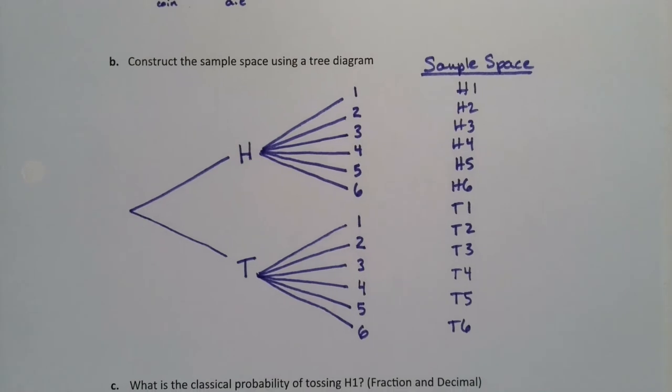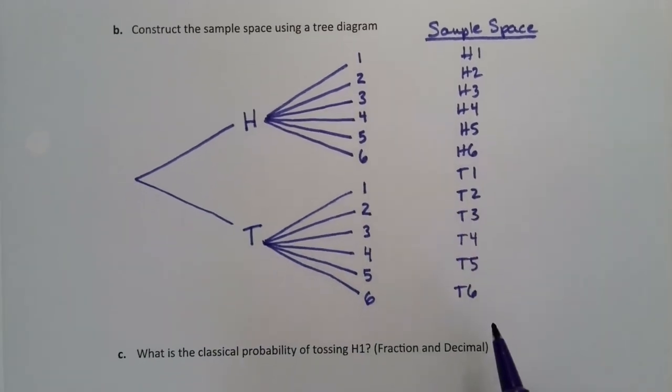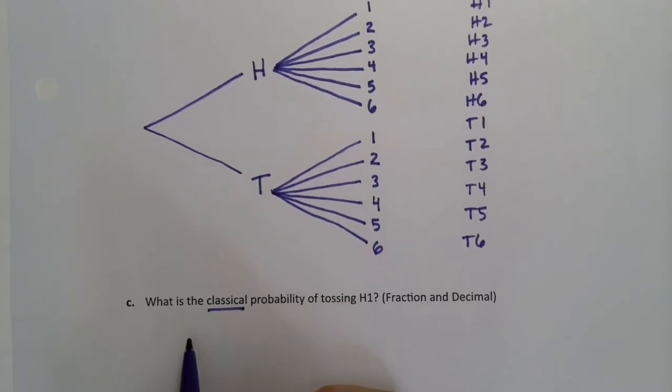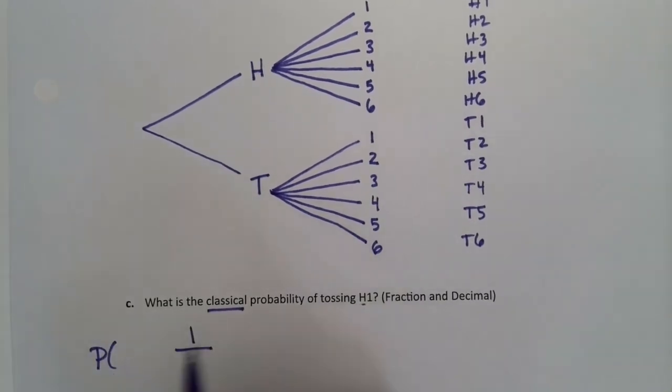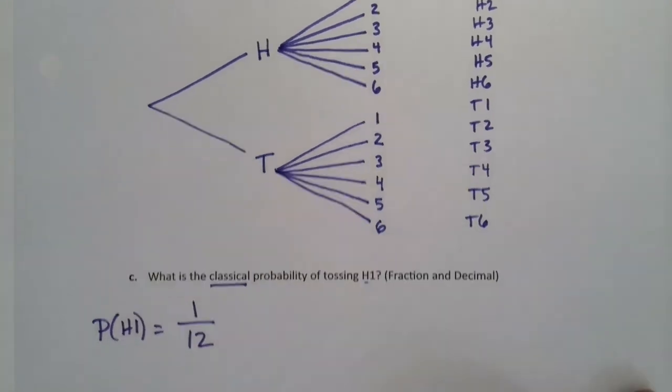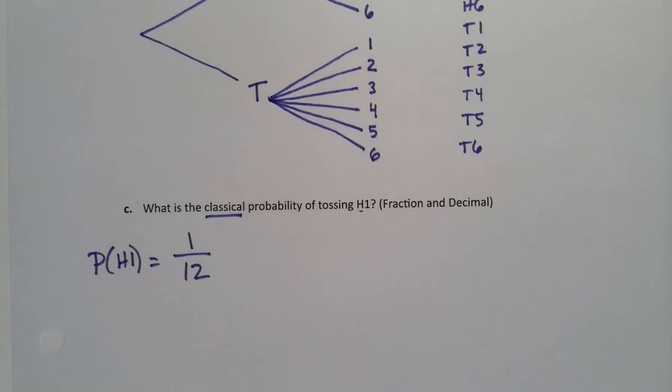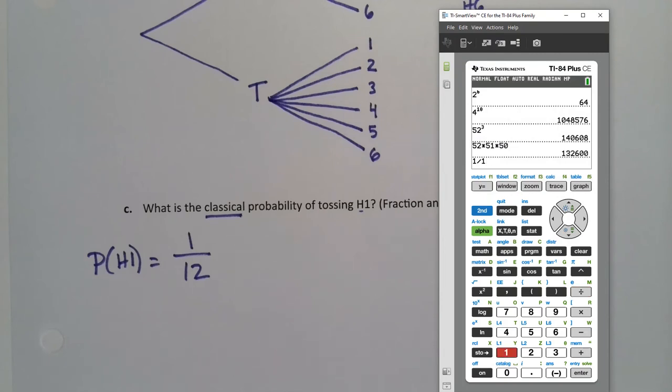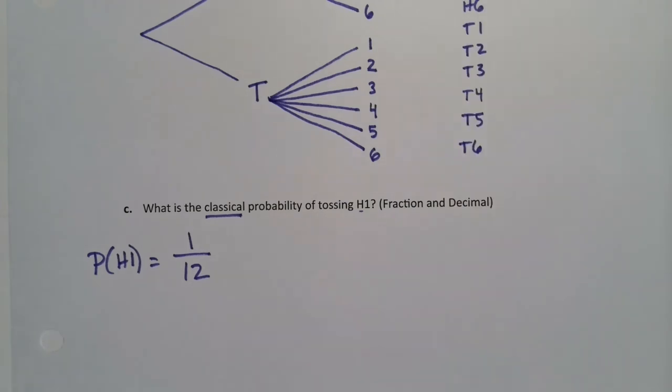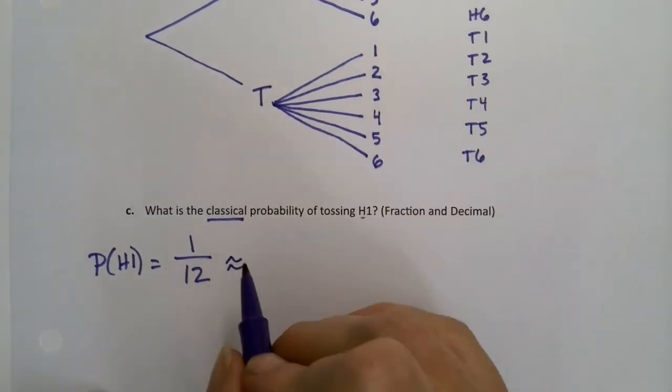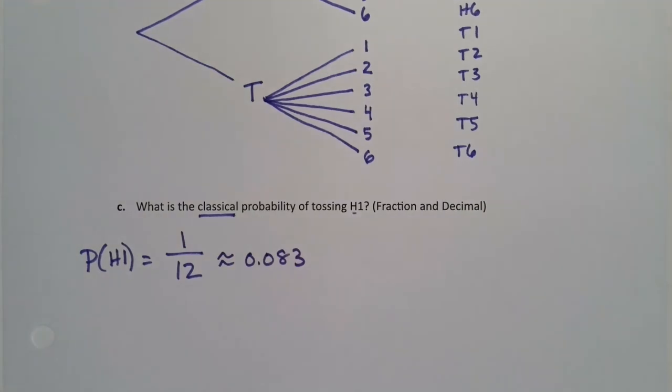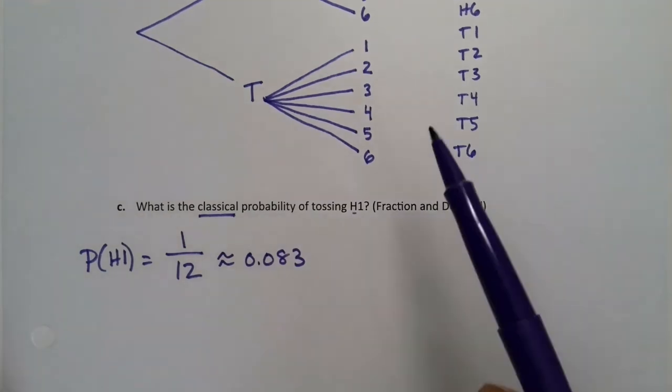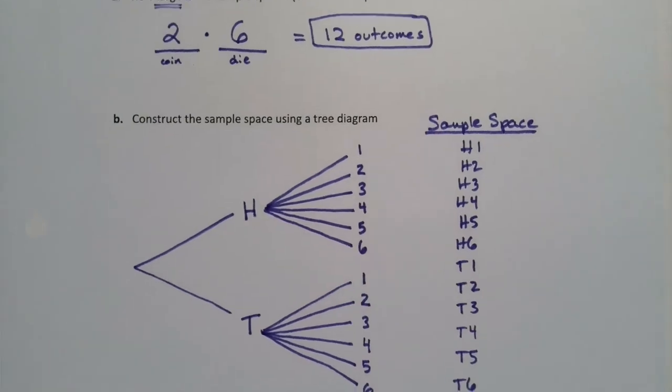All right, now what's the probability of each one of those? Well, there's 12 outcomes total. So the classical probability is one out of—oh, it's the probability of H1, by the way. It's one out of 12. Now, one out of 12 would be 0.0 something. One divided by 12 is 0.083. All right, so there we have it. So I'll say an approximation because I wanted a decimal and a fraction. So it's 0.083. Wonderful. See? So that's a tree diagram, the classical probability, and the multiplication rule of counting all reviewed.